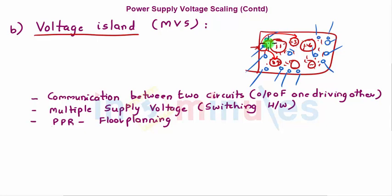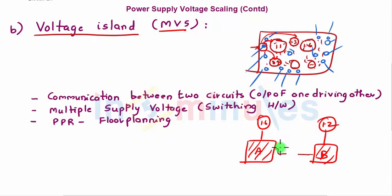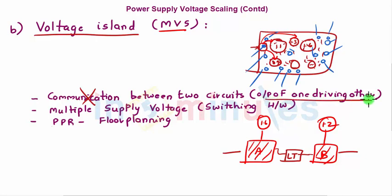There are some drawbacks to multi-level voltage scaling. If circuit A is operating at a voltage island of 1.6 V and circuit B at 1.2 V, when these blocks need to communicate, the output can be corrupted due to the difference in supply voltages. To avoid this, level translator circuits are needed to restore the VDD value. This is one drawback: whenever one block is driving another at a different VDD, you need additional level translator hardware.